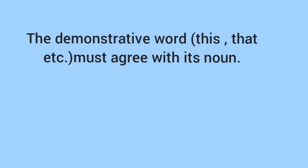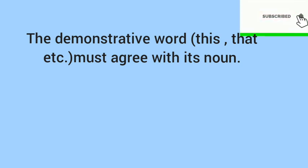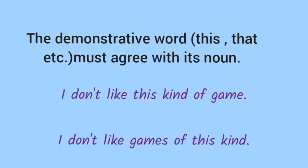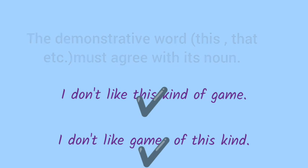This, that, etc. must agree with their noun. If you use 'this', you have to use the singular noun; 'that' also takes a singular noun. 'These' and 'those' take the plural noun. So this is the rule you have to remember. Like the example here: 'I don't like this kind of game' is a right sentence, and 'I don't like games of this kind' is also a right sentence.